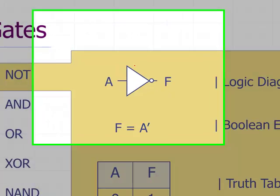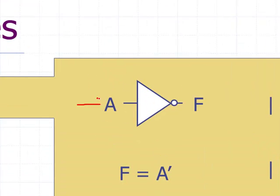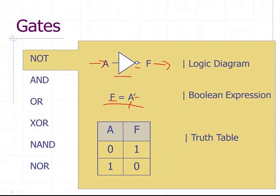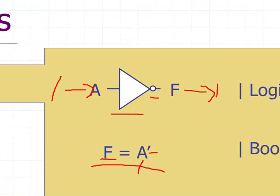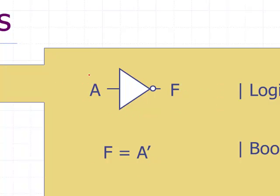Let's look at our six basic gates. A NOT gate: electricity goes in on the input and opposite electricity comes out on the output. It's represented by a triangle with a little bubble at the end. In Boolean algebra, it's represented as input A with a negation sign, and that's output F. Looking at the truth table: if a zero goes in, a one comes out; if a one goes in, a zero comes out.